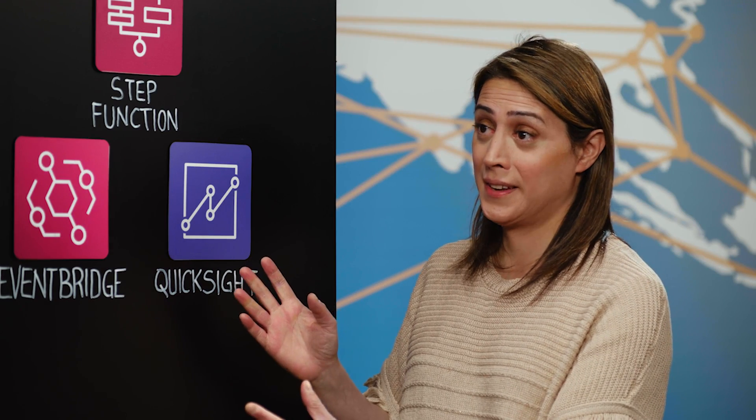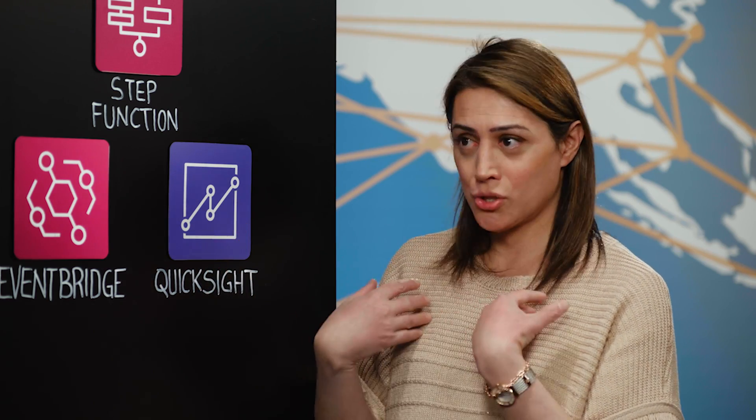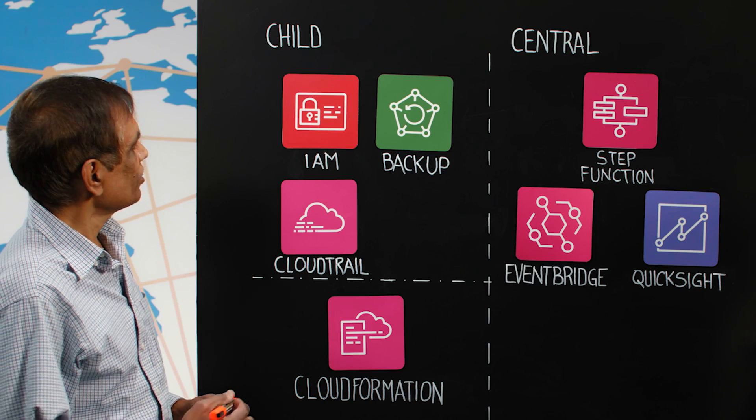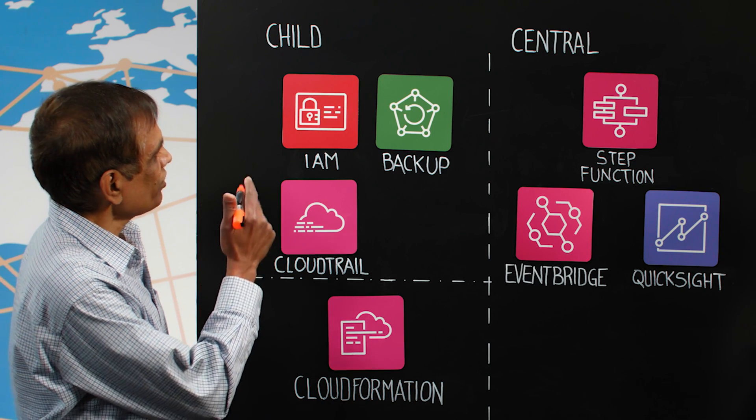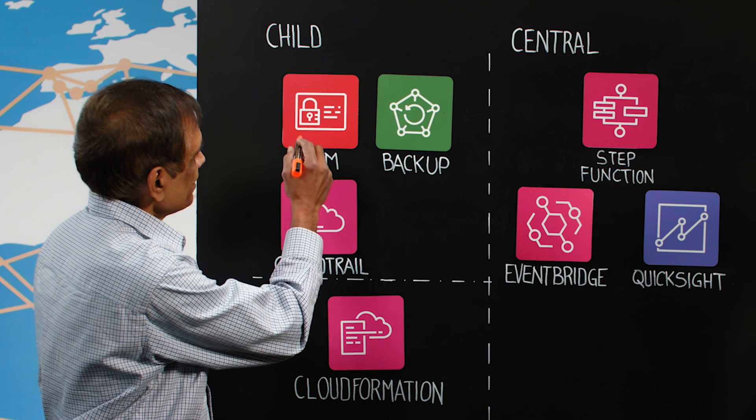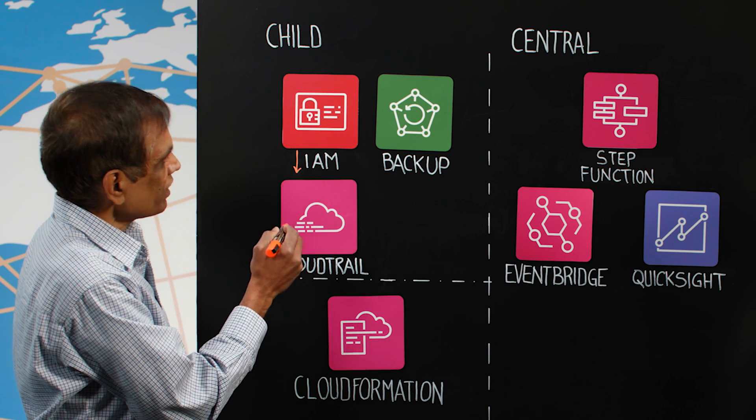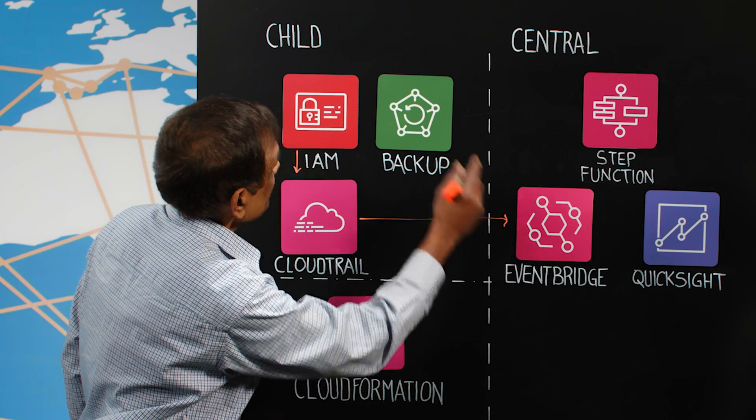So it sits on AWS and I want to dive straight into the architecture. Assume I'm an application owner, I need to back up my applications. Can you walk us through the flow? Where does it start? Sure. So every application has an IAM role. When that IAM role is created, it triggers a CloudTrail event. The CloudTrail event is forwarded to the EventBridge in the master account.